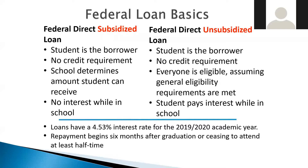For unsubsidized loans, everyone is eligible assuming general eligibility requirements are met. However, interest does accumulate while the student is in school — they may not have to pay it, but that's credit that will accrue. For the 2019–2020 academic year, the loan rate was 4.53%. Another important thing to understand is that repayment begins six months after graduation or when the student is no longer at least a half-time student.